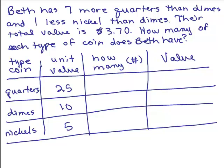So let's go back up to the original problem. Beth has seven more quarters than dimes. Well, I'd have to know how many dimes there were in order to figure out the number of quarters. So quarters can't be the first thing. One less nickel than dimes. All right, well I have to know the dimes also to get the number of nickels. So the clue is I need to start out with a number of dimes.